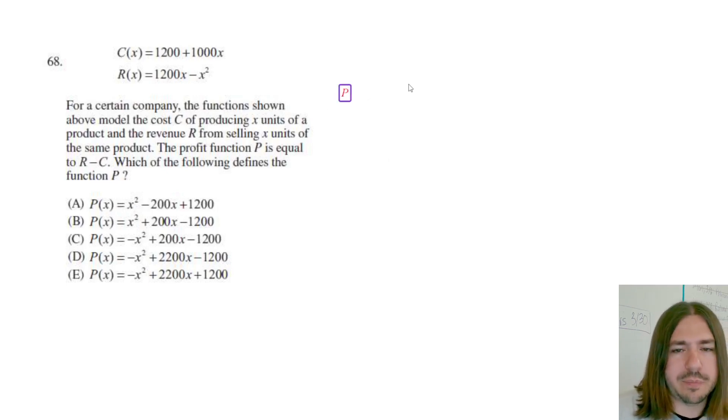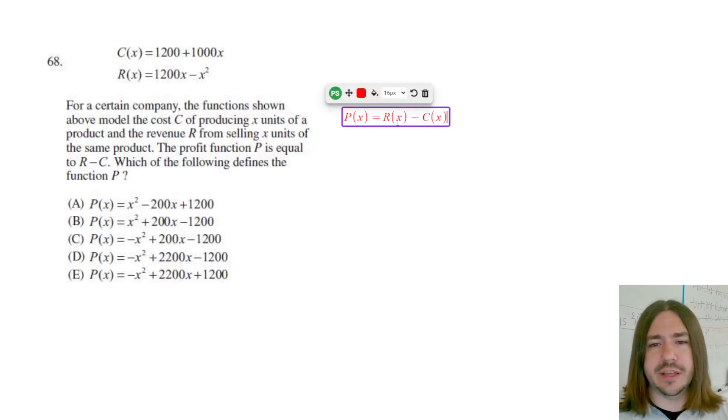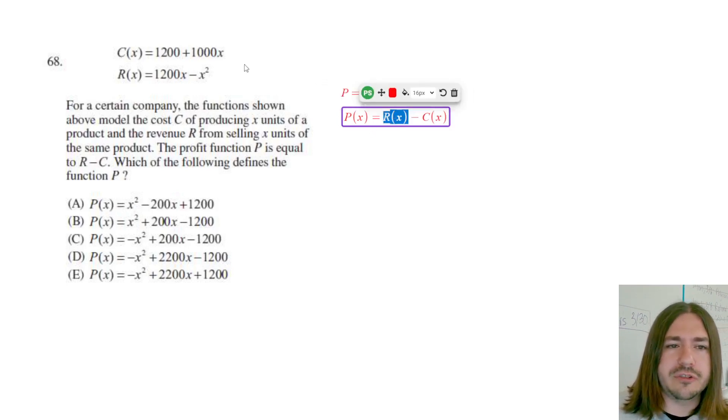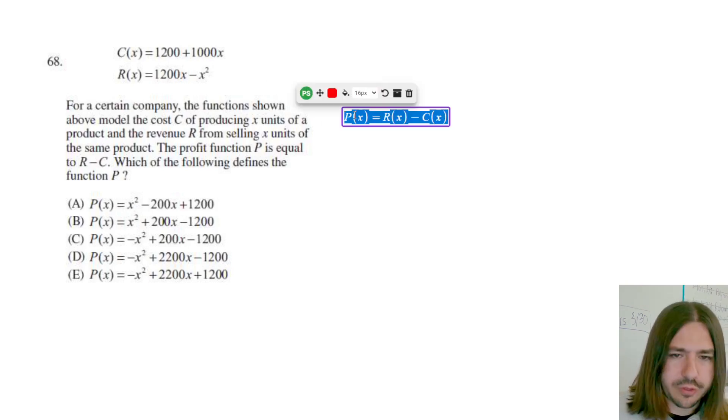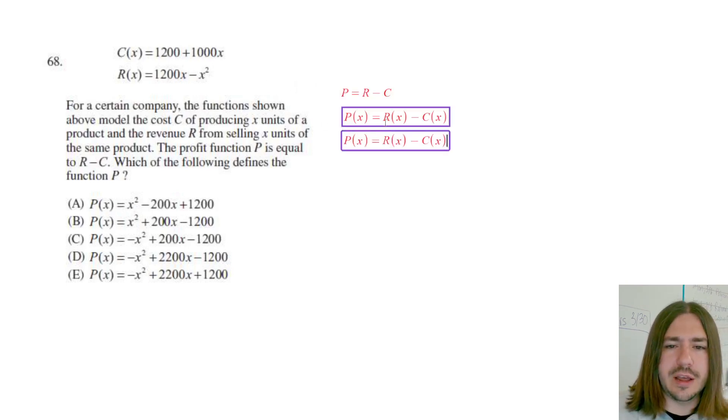Okay, so if we're going to say P is R minus C and we're going to write this in terms of X, so P of X is equal to R of X minus C of X, just to define what the independent variable is. All we have to do here is just substitute these expressions in for their respective functions.